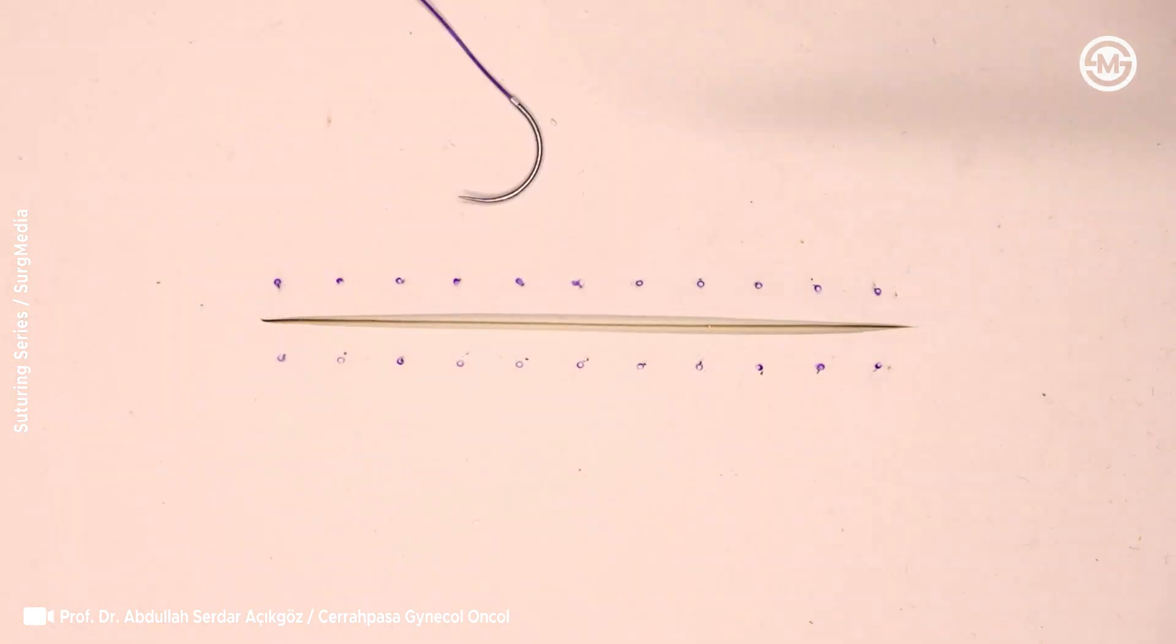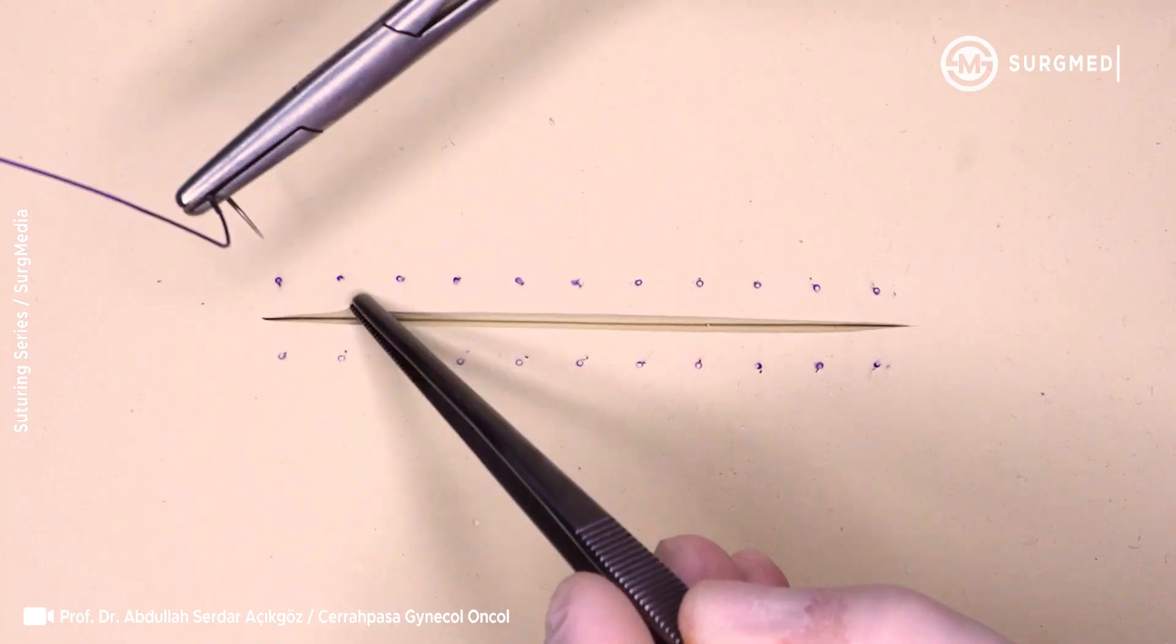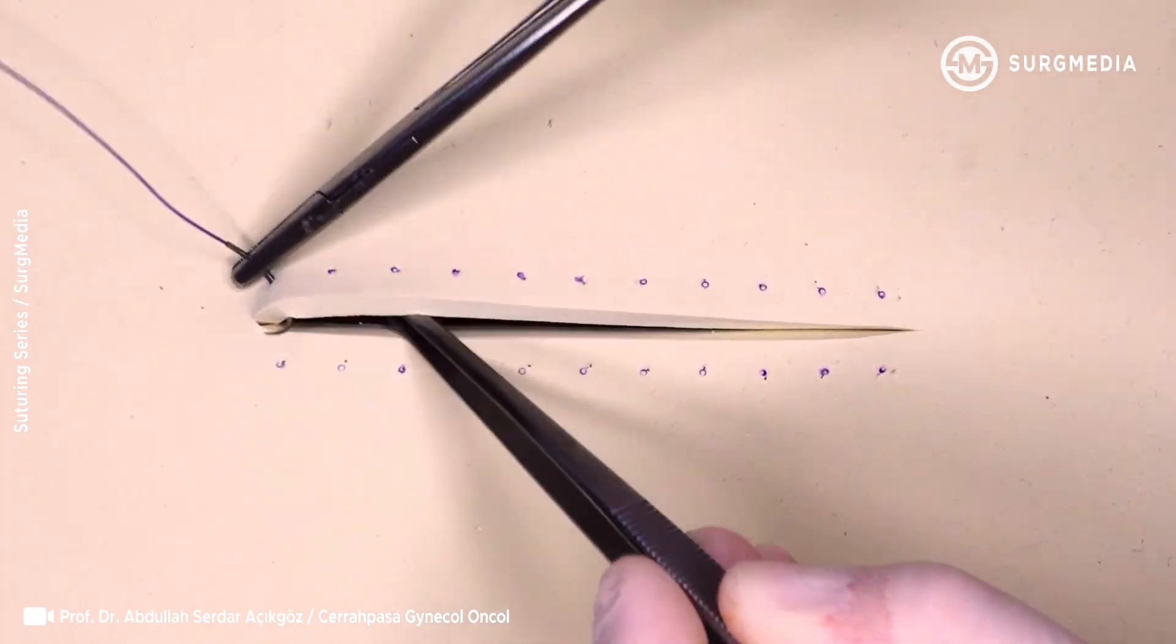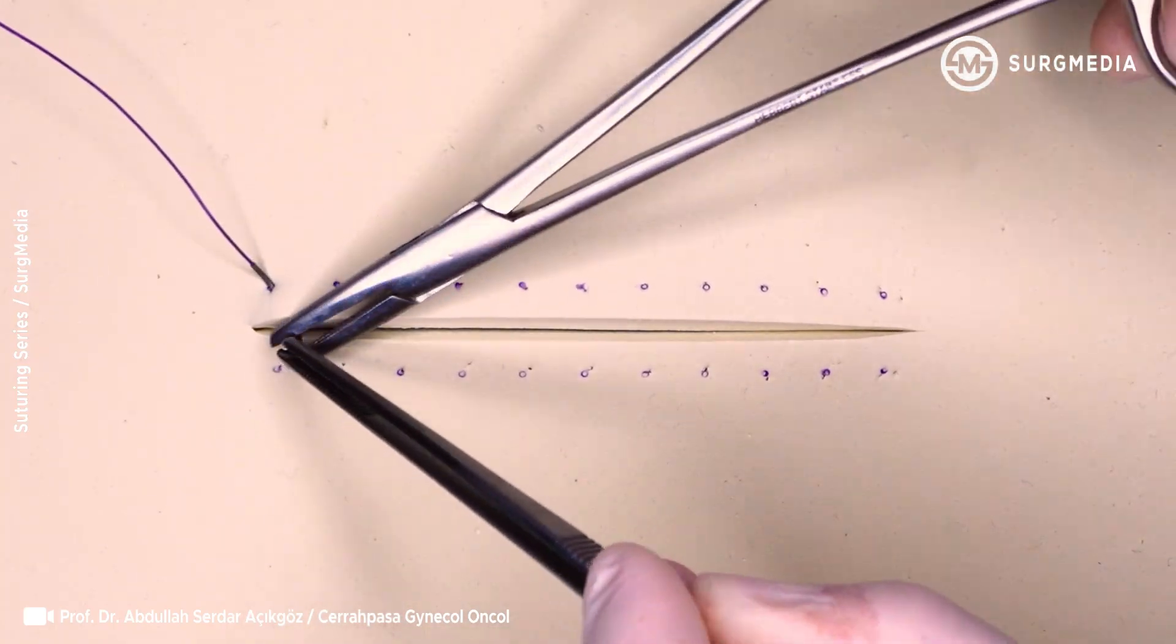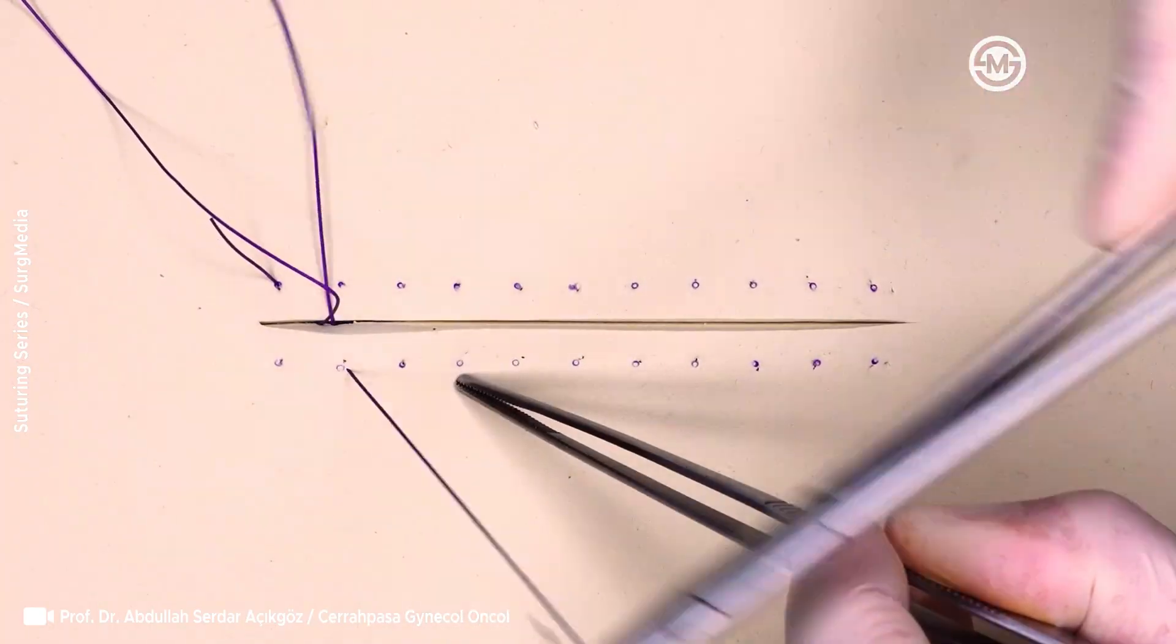In today's video, we're going to talk about the Hidden X-Suture, also known as the inverse figure of eight suture technique. As the name suggests, this technique is basically a reverse version of the classic figure of eight suture.